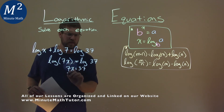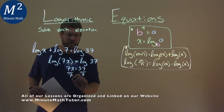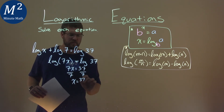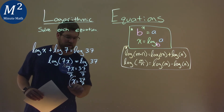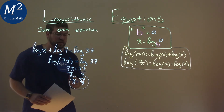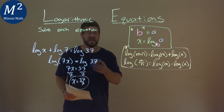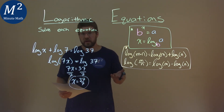Pretty easy. Divide both sides by 7, and x equals 37 divided by 7. This doesn't simplify anymore, and so that is our final answer.